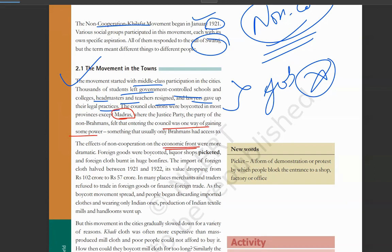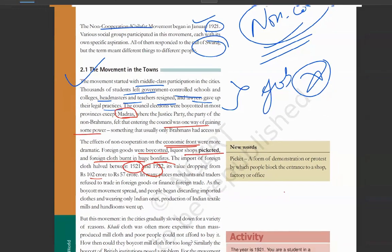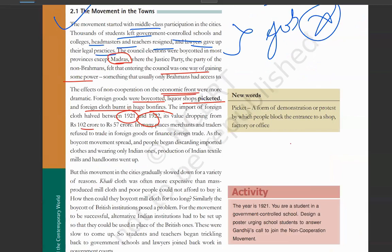So Non-Cooperation Movement جو تھی وہ economic front پے بہت زیادہ dramatic ہو چکی تھی. Foreign goods بائیکوٹ ہو چکے تھے, liquor shops جو تھی picketed ہو چکی تھی, foreign cloth جو تھا huge bonfires کے در جلانا شروع کر دیا. Impact of foreign cloth 1921-22 کے اندر - اس کی value کم ہو گئی, half سے بھی زیادہ کم ہو گئی. 102 crore سے value گھٹ کے 57 crore ہو گئی.